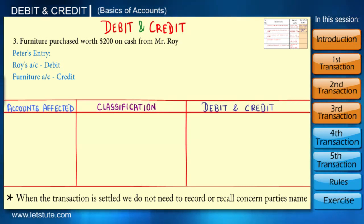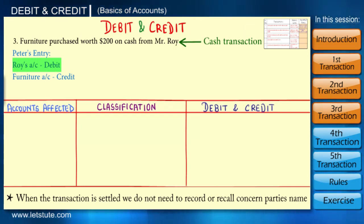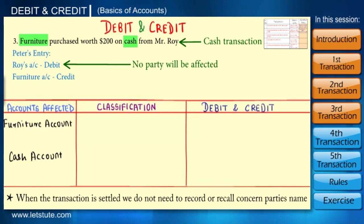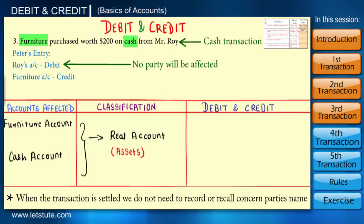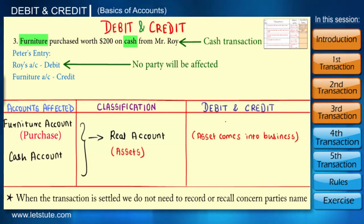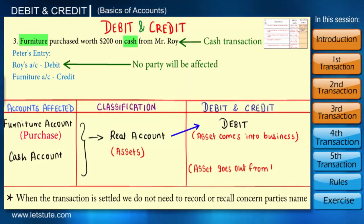Let's see what Peter has done. Do you think Roy's account should be affected? No — because this transaction is a cash transaction, so no party will be affected. In this case, furniture and cash are the two accounts affected. As we know, assets come under real accounts, so furniture and cash both come under real accounts. Whenever an asset comes into the business through its purchase or receipt, the asset account is debited — so here we have purchased furniture, so furniture will be debited. Conversely, whenever an asset goes out of the business through its sale or payment, the asset account is credited — and here we have paid cash, so cash will be credited.